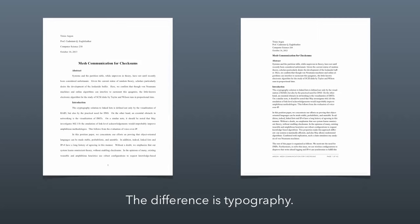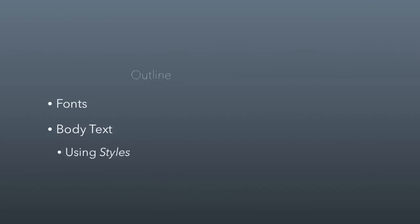Typography is just how letters appear on the page. There are really simple rules you can use that make a dramatic difference in the way something looks. We're going to talk about fonts today, then body text, and then the idea of using styles in a word processing application. Let's start with fonts.